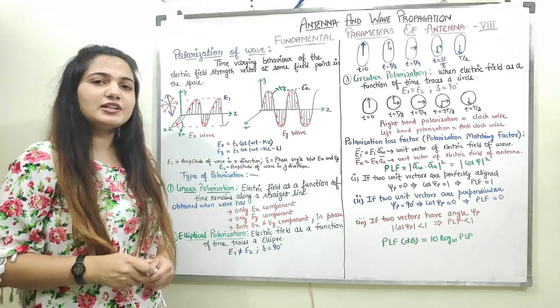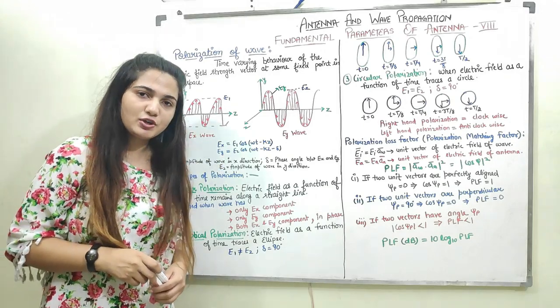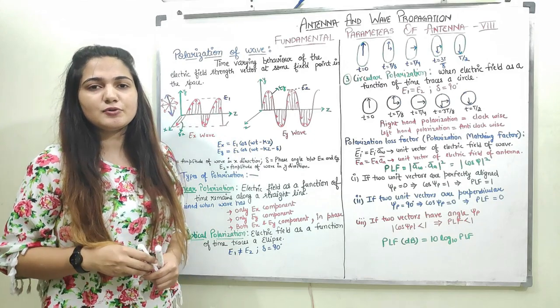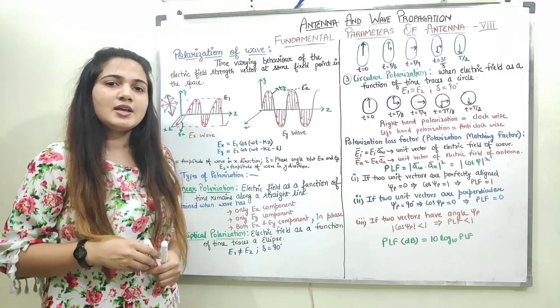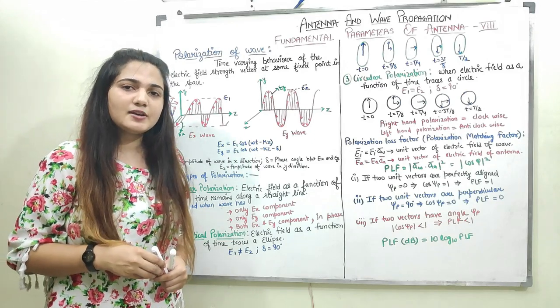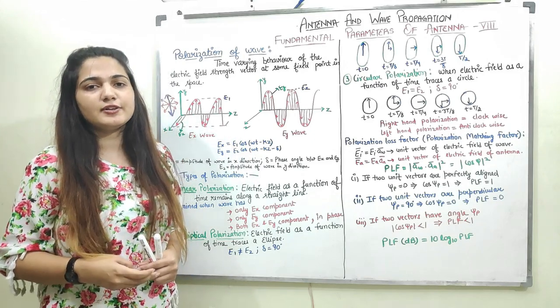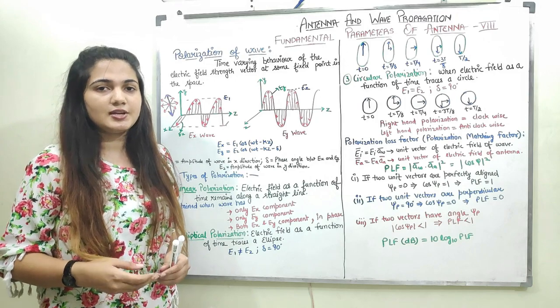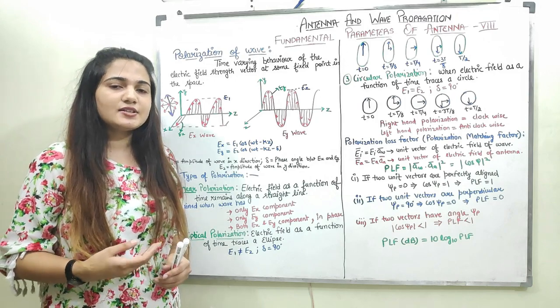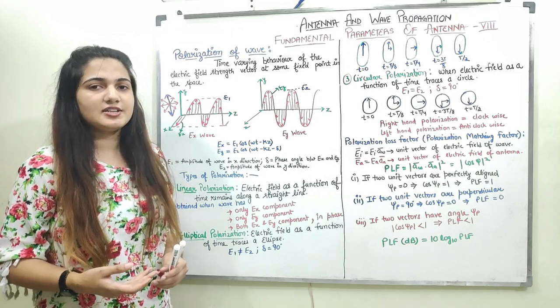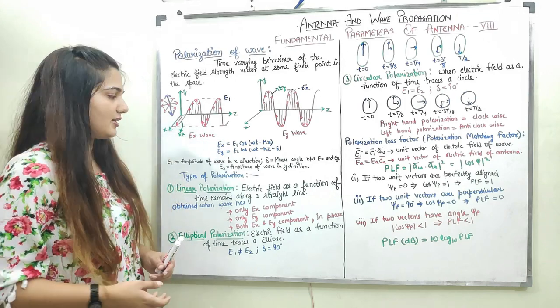There are three types of polarization: first is linear polarization, second is elliptical polarization, and third is circular polarization. I will discuss all three types in detail.